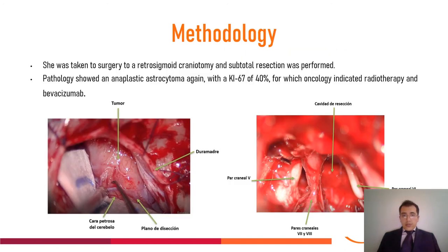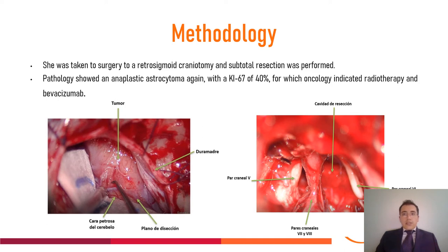She was taken to surgery for a retrosigmoid craniotomy and subtotal resection was performed. Pathology showed an anaplastic astrocytoma again, with a KI-67 of 40%, for which oncology indicated radiotherapy and bevacizumab. On the left, the presence of a clear pink lesion invading the entire extent of the right cerebellopontine angle can be observed. On the right, the cavity after tumor resection is shown, with significant decompression of the cranial nerves. However, infiltration of the seventh and eighth cranial nerves was perceived, which did not allow total resection of the lesion given the high adherence between them and the risk of neurological injury.